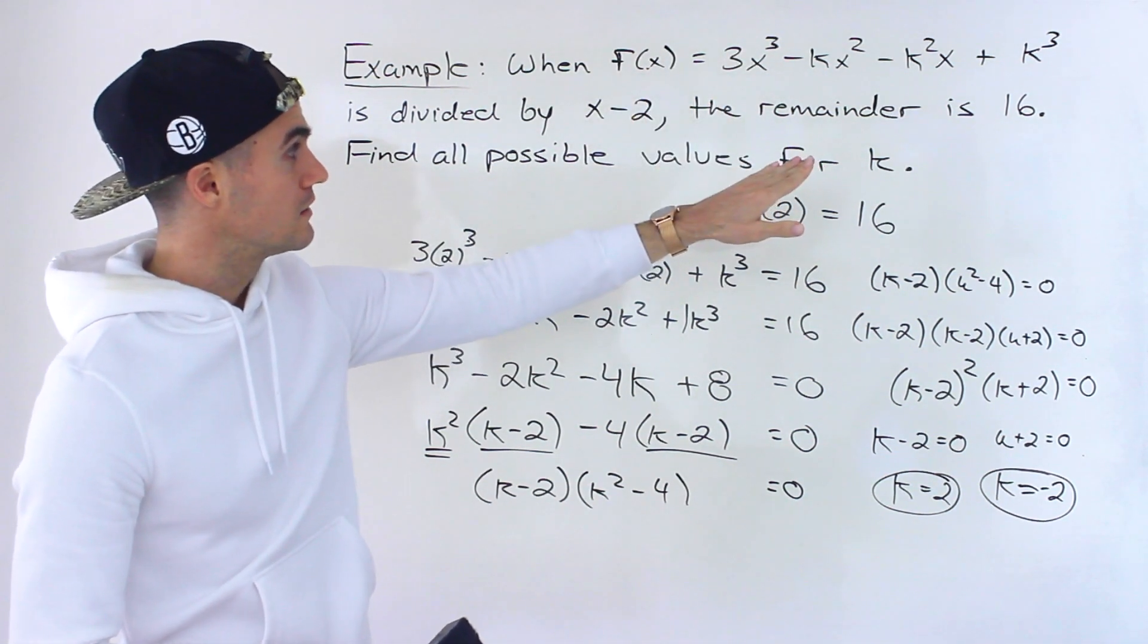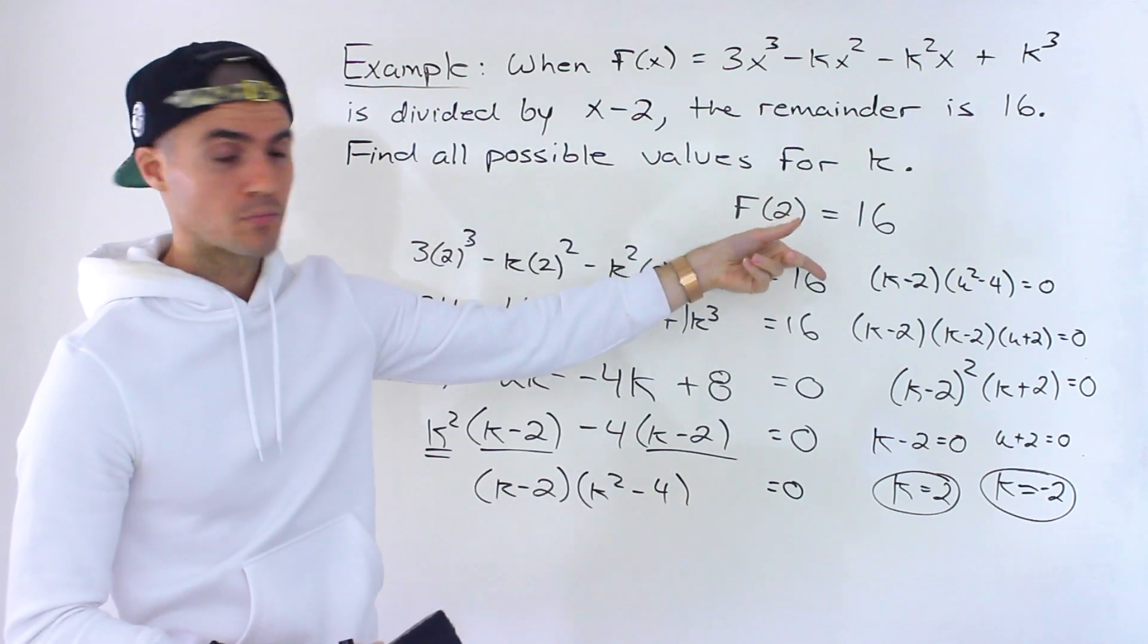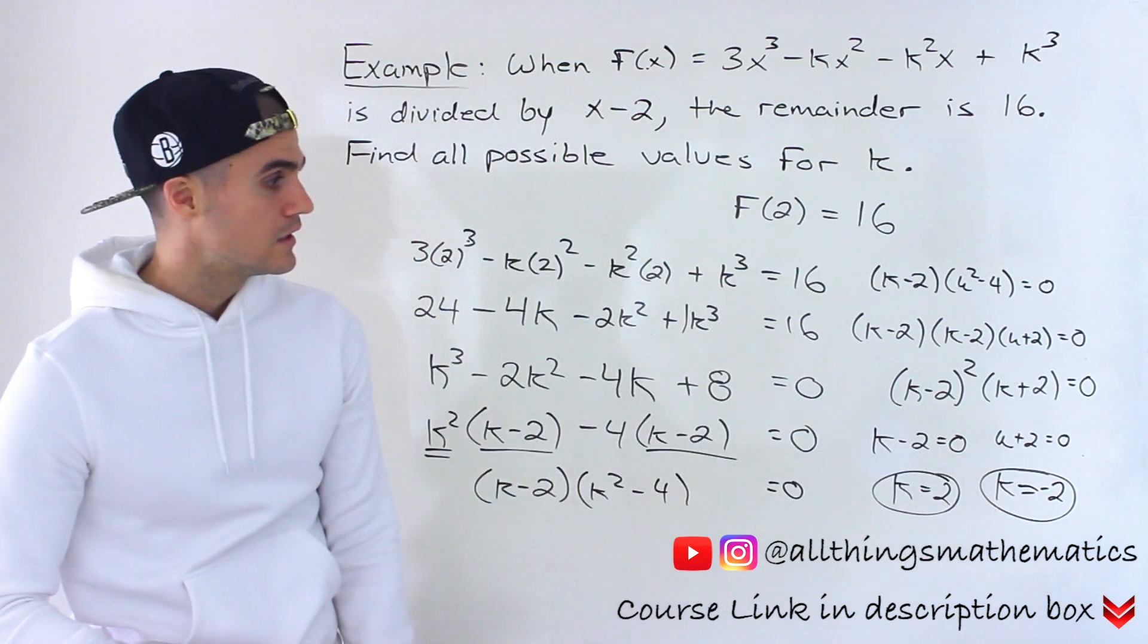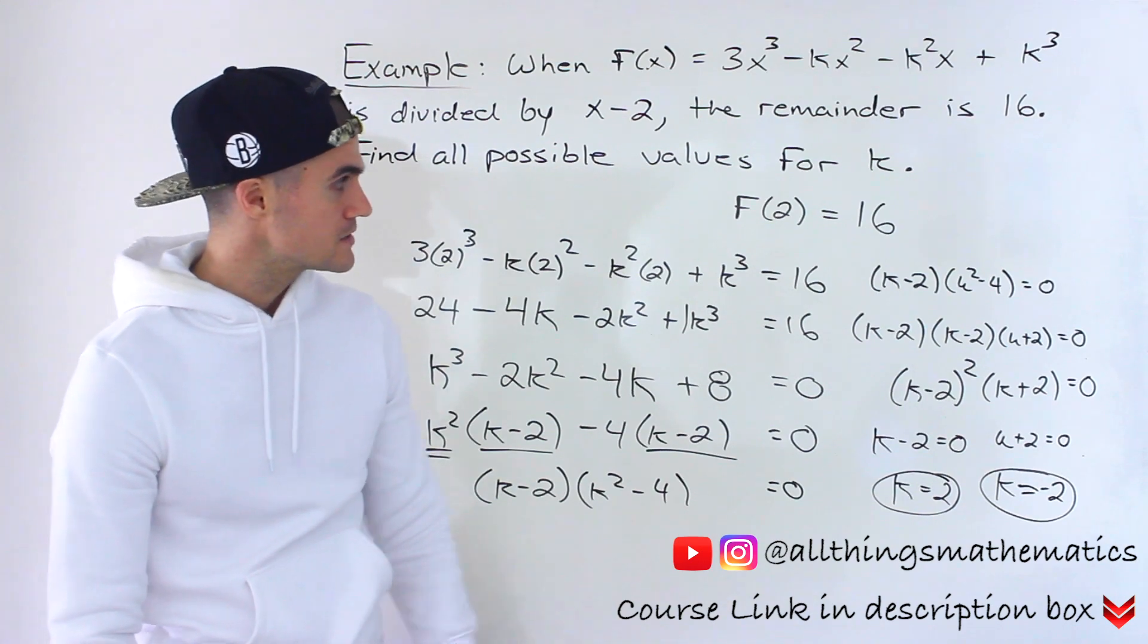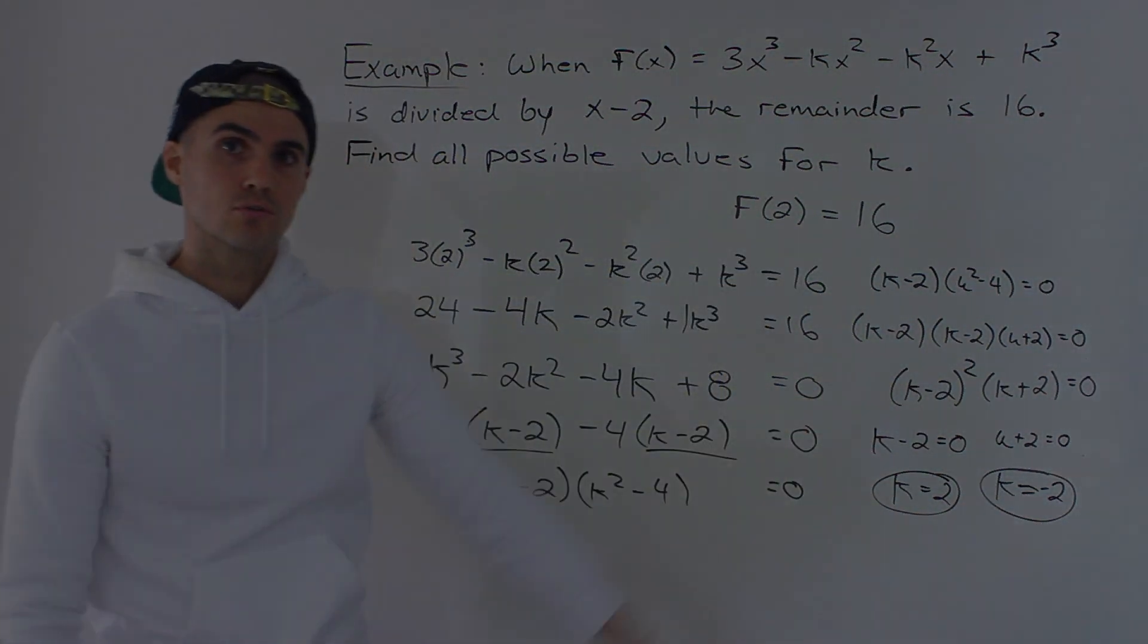Then see if f(2) = 16 for that polynomial when k = -2. You would see that it does work out. So make a general statement, do the algebra, and you get the two k values.